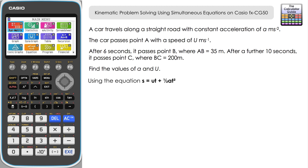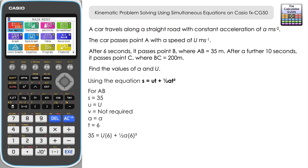Let's set up the first situation: what is happening between A and B. We know S the displacement is 35 meters. U we'll label as capital U — that's something we're going to find. V is not required. A we'll label as A, our constant acceleration. And T between A and B is 6 seconds. Substituting into the equation: 35 equals U times 6 plus a half A times 6 squared, which simplifies to 35 equals 6U plus 18A.